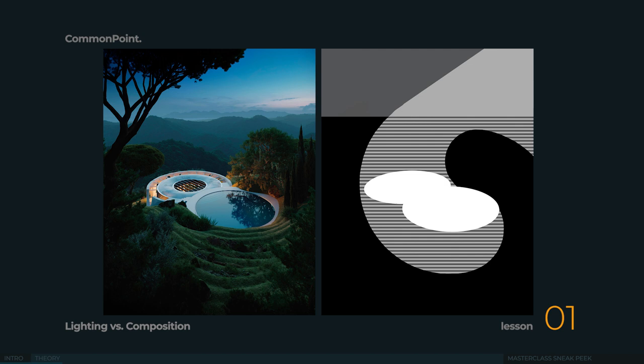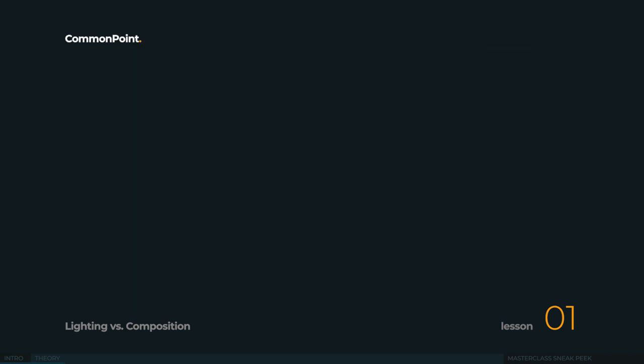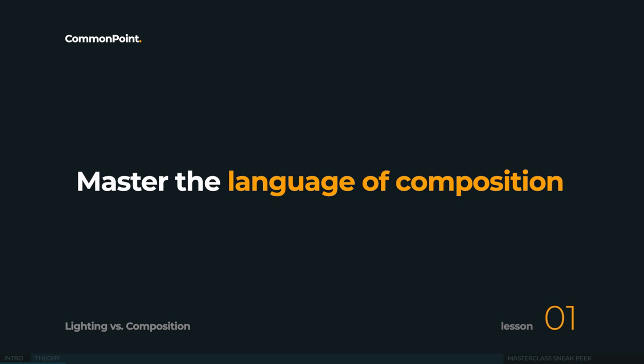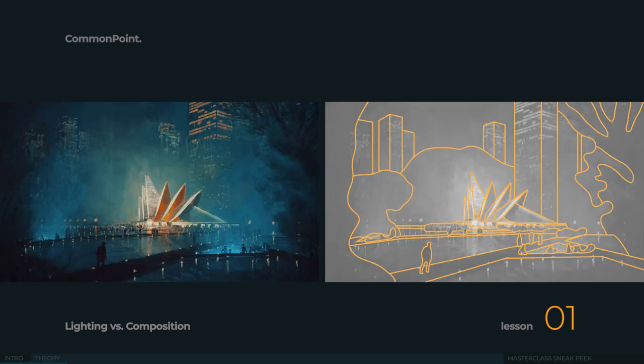The first part is to understand the composition — whether you have something interesting and well balanced, or cluttered and boring. You should understand the language of composition: what are the key elements, what's your hero object, and what plays the second role. The ability to quickly notice the potential of your image is such an important skill.